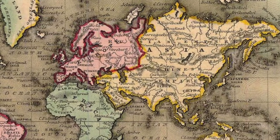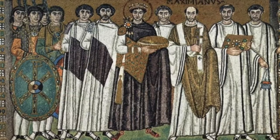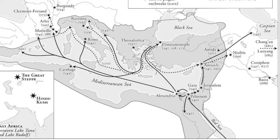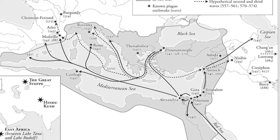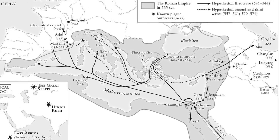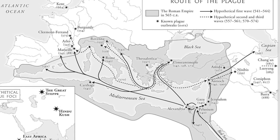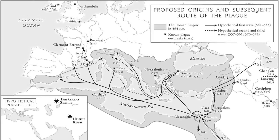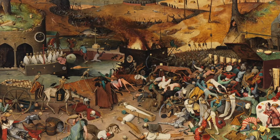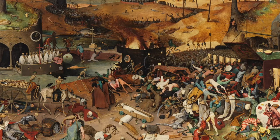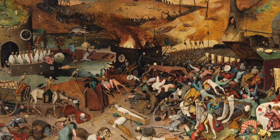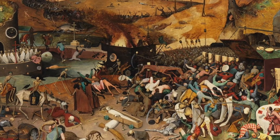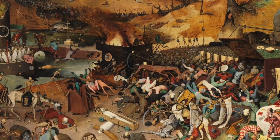Byzantine Greek scholar Procopius wrote of the plague's beginnings: 'It began with the Egyptians who live in Pelusium. It divided and part went to Alexandria and the rest of Egypt, and part to the people of Palestine, the neighbors of the Egyptians, and from there overran the whole earth.' The Bubonic Plague can be transferred from rats to humans through flea bites. Pus-filled buboes then grow on parts of the body, generally in the armpit and groin area, and a fever develops. Though the Black Death was caused by the same disease, researchers have determined that a different strain caused the Justinian Plague.